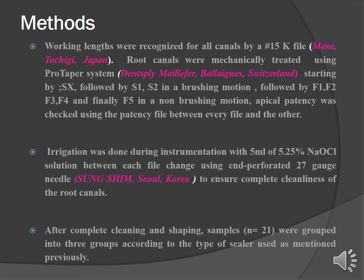The root canals were mechanically treated using the Two Taper system. Starting with SX, followed by S1 and S2 as shaping files in a brushing motion, followed by F1, F2, F3, F4 and finally F5 in a non-brushing motion. Apical patency was checked using a patency file between every single file. Irrigation was done throughout instrumentation using 5 mL of 5.25% sodium hypochlorite solution between each file, using an end-perforated 27-gauge needle. After complete cleaning and shaping, the 21 roots were grouped into three groups of seven roots each, according to the type of sealer used.